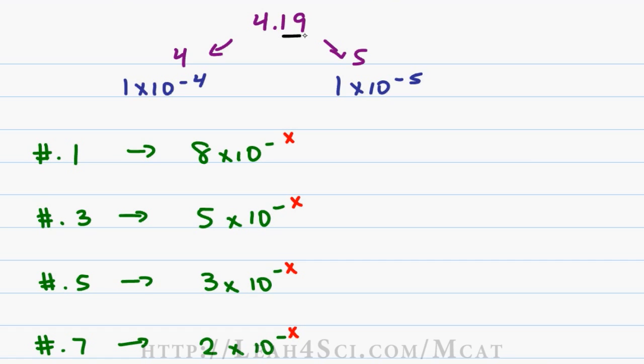In this case, if we have 4.19, let's round that to 4.2. Remember on the MCAT, you're allowed to round because it will be close enough. If 0.1 gives me an 8 and 0.5 gives me a 5, then our answer has to be somewhere between 8 and 5. So it will be between 5 times 10 to the minus 5 to 8 times 10 to the minus 5.